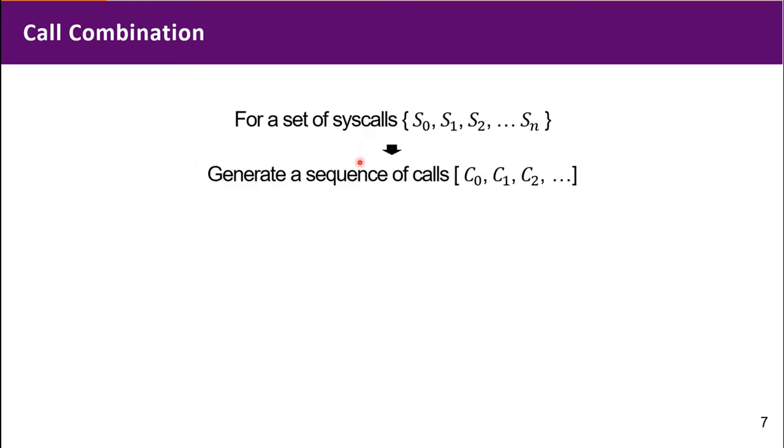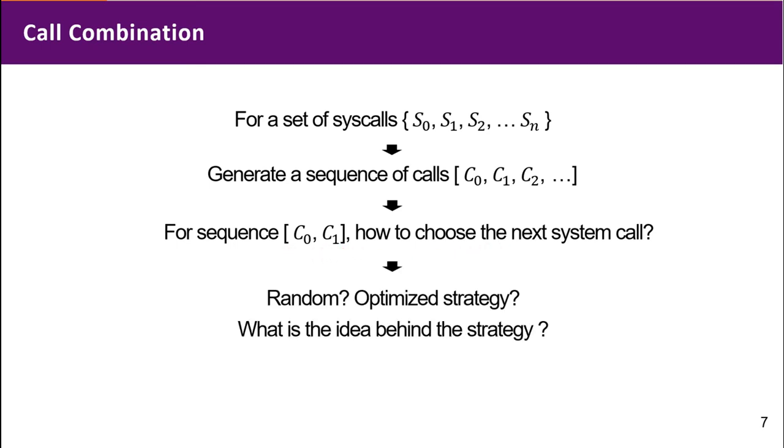We further need to generate high-quality call combinations. That means for a given set of syscalls, we need to generate a sequence of calls. The problem is for sequence C0 and C1, how do we choose the next syscall?